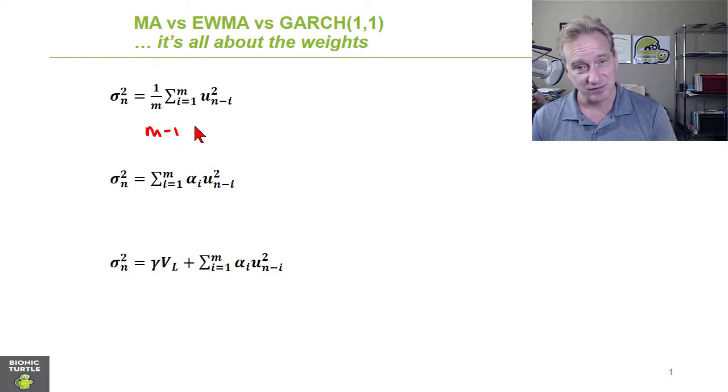So the M minus 1 is going to be slightly more conservative, but in general, close enough that we can replace the M minus 1 with M and use an average squared return for the estimate of variance under the moving average approach. But we saw there's a glaring weakness with this approach, the moving average.